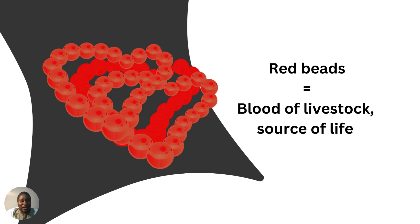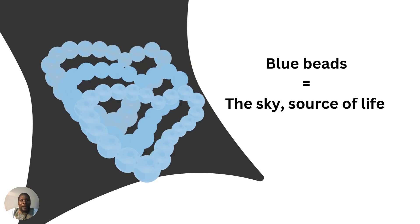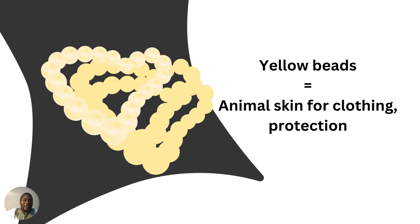Red represents blood of livestock, which is the source of life. Blue represents the sky, which again is the source of life. Yellow represents animal skin for clothing and for protection.